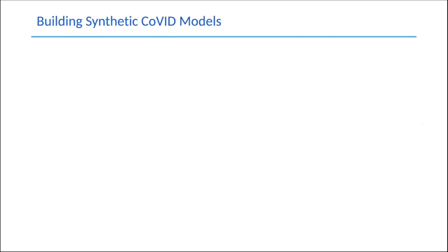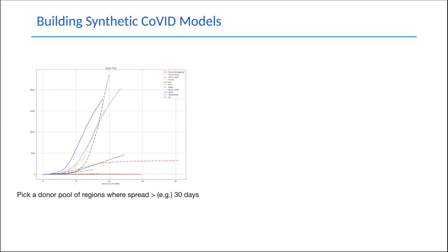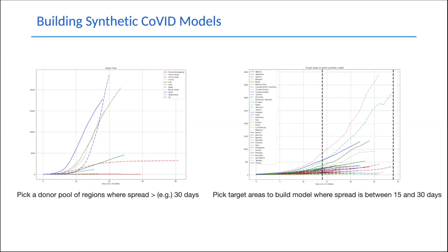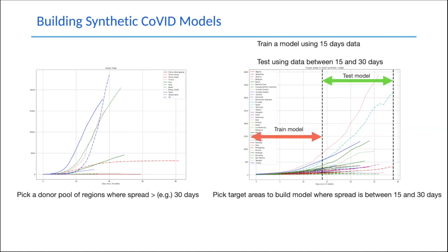We can build synthetic COVID models using the following process. First, identify a donor pool of regions where the spread has been active for a fairly long period — say 30 days. Then pick target areas to build the model where the spread has been active long enough to build a model — say between 15 and 30 days. I'll train a synthetic model using the first 15 days of data, then test using data between 15 and 30 days. Depending on how far the target region is in its timeline, we can compare the prediction to actual data.